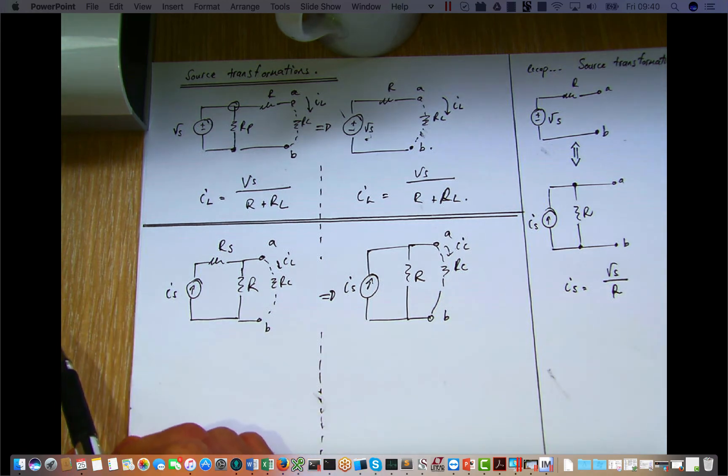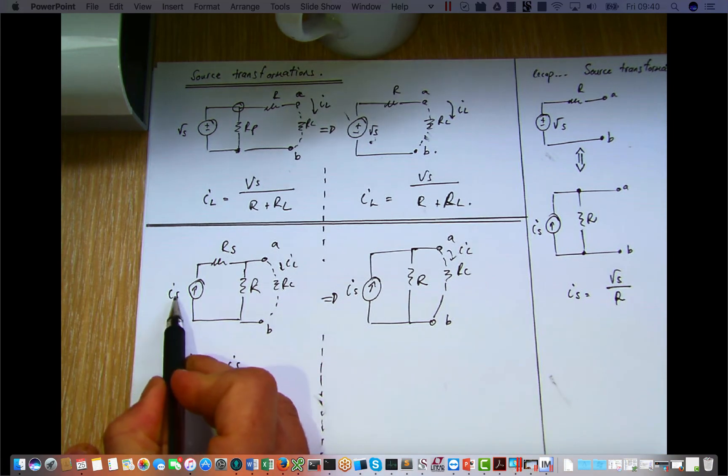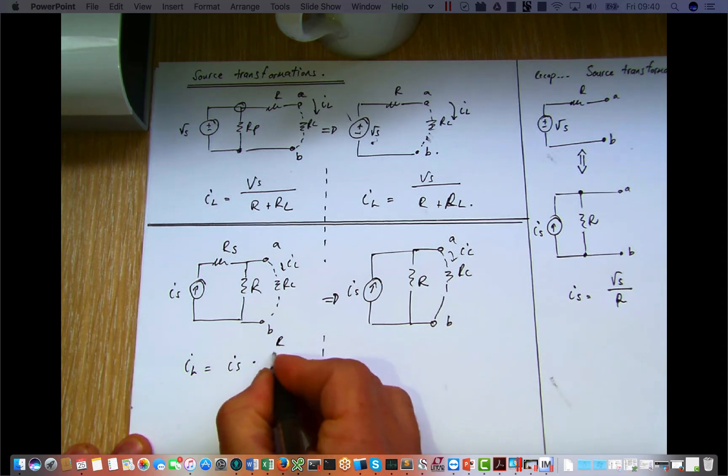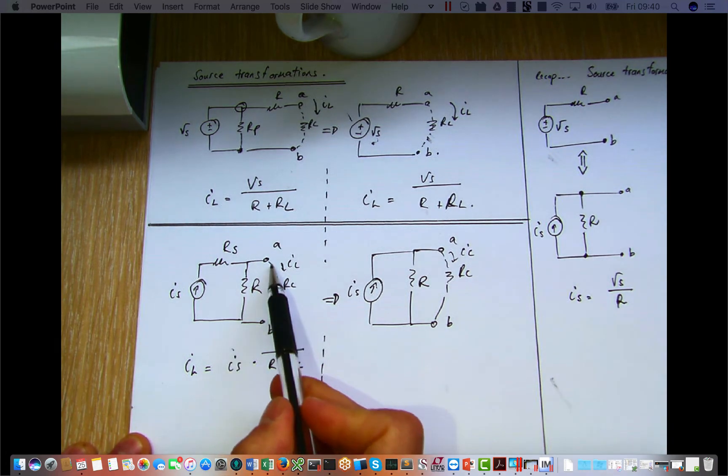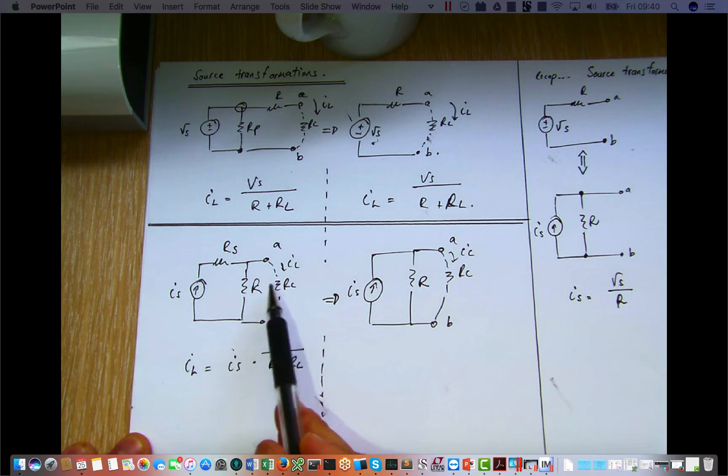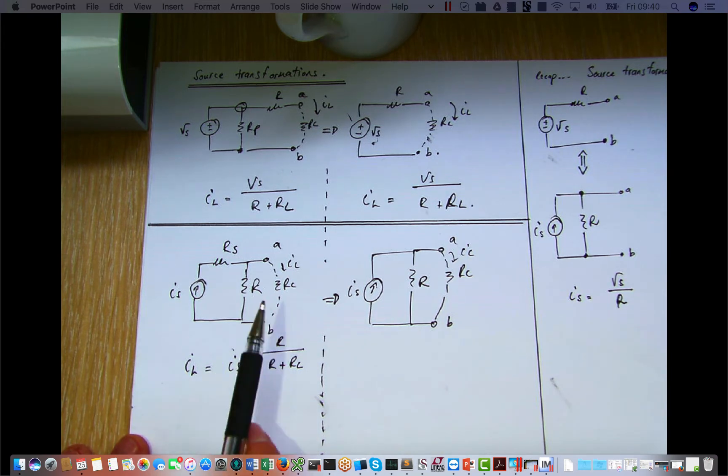Then I can use an equation for current division, which says that IL is equal to my source current IS, right, times the resistor R, the other resistor R, divided by the sum of RL. Remember, so in this equation, if I want to calculate the current flowing through a particular resistor, then it's the other resistor here, R in the other branch, divided by the sum of the two resistors. This equation is only valid for the case of two simple resistors. Go through the derivation of it again, and also take note of the case where you have N resistors in parallel. Right, but in any case, so this is the current for this particular case flowing through the load resistor.